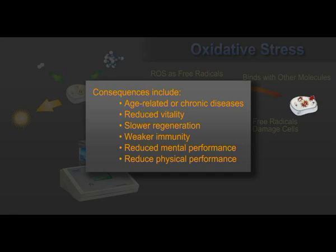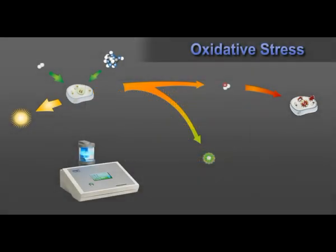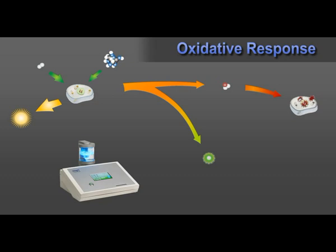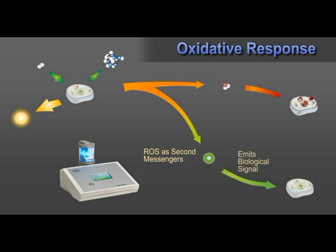Oxidative response is needed to counterbalance cellular damage caused by oxidative stress, and it has an essential and positive impact on cellular activity. Oxidative response is initiated when ROS act as second messenger molecules. During oxidative response, ROS emits their reactive energy, becoming biological signals for repair instead of using their energy to bind with molecules. Special repair proteins — in this case enzymes — detect the damage and execute repair. This is essential for re-establishing proper cellular activity in present and future cell generations.